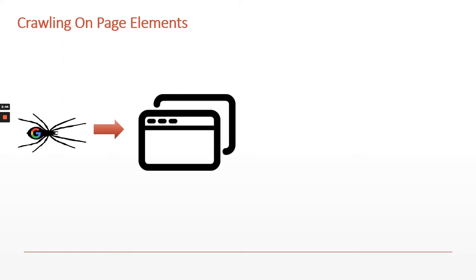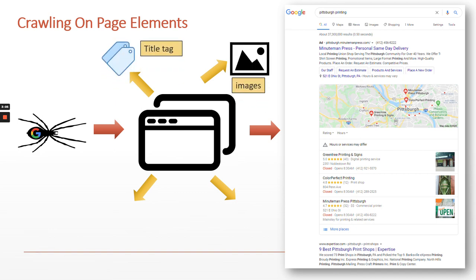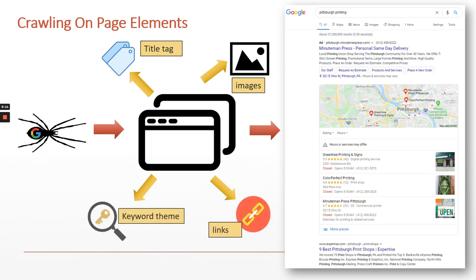Here's our spider again, going out to visit our web page. We hope it's going to show up on a SERP for the search query in question. The spider is going to be checking out this web page for a number of different on-page elements — things like the title tag, the images, whether you used alt image text, links, and a consistent keyword theme. All of the SEO elements on the page should point to a relevant keyword theme that ideally is the keyword we want to rank for. And that is how it works.